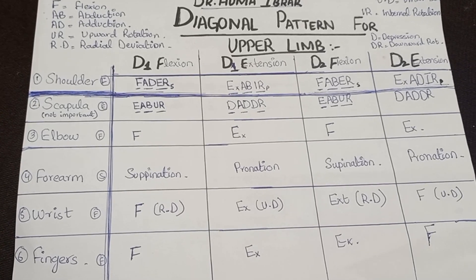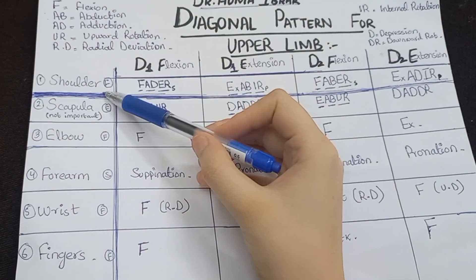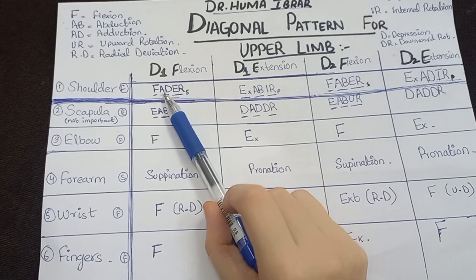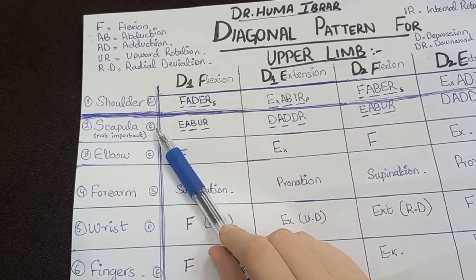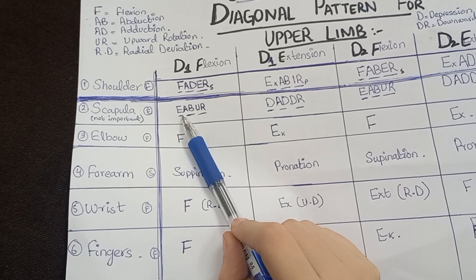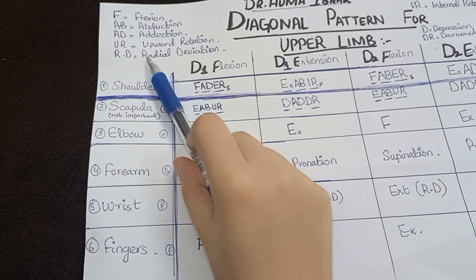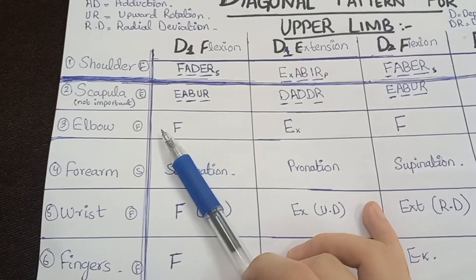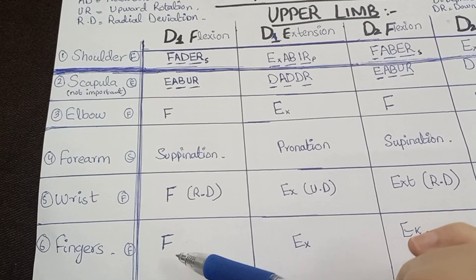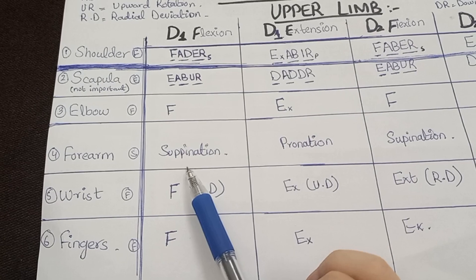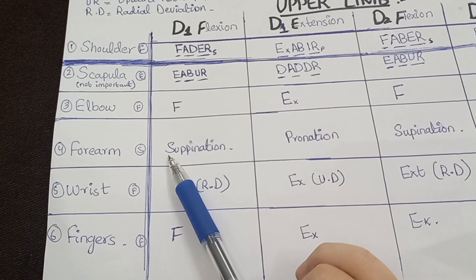Moving towards the diagonal pattern for the upper limb, we look at shoulder, scapula, elbow, forearm, wrist, and fingers. For the shoulder D1 flexion pattern, the mnemonic is 'better flexion' — flexion, adduction, external rotation. For the scapula, the mnemonic to remember D1 flexion is extension, abduction, and upward rotation. In the elbow there will be flexion, in the wrist flexion, in the fingers flexion, and in the forearm there will be supination — noted as a smaller 'S'.